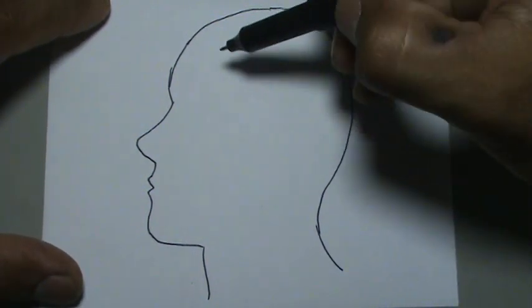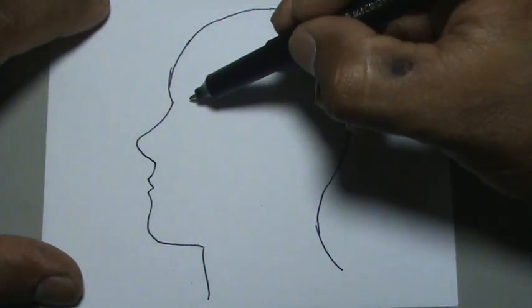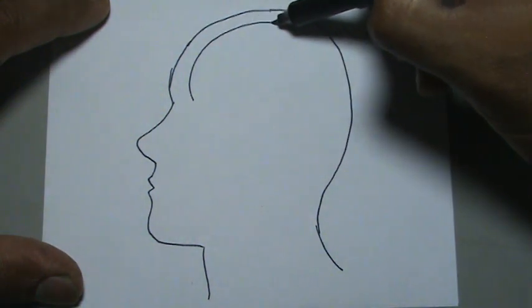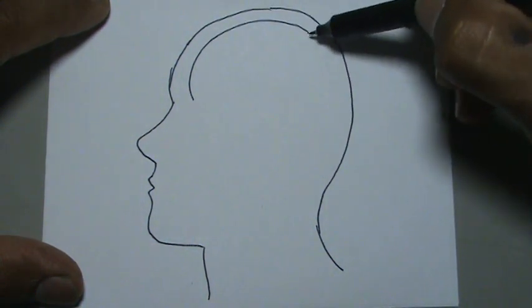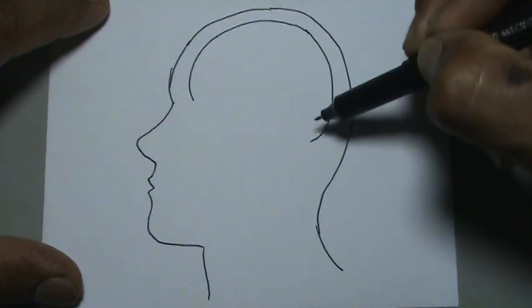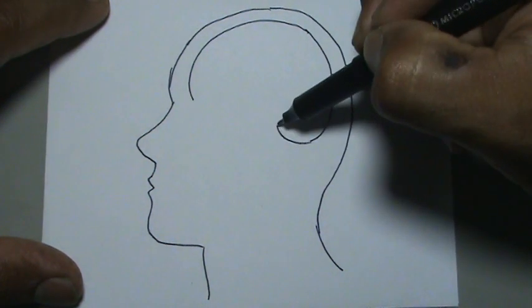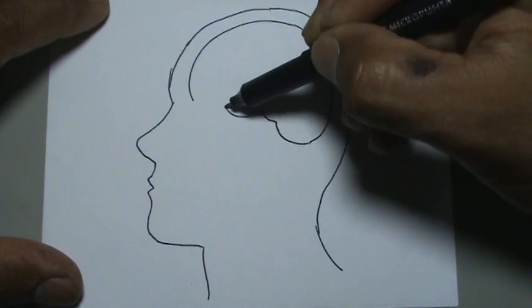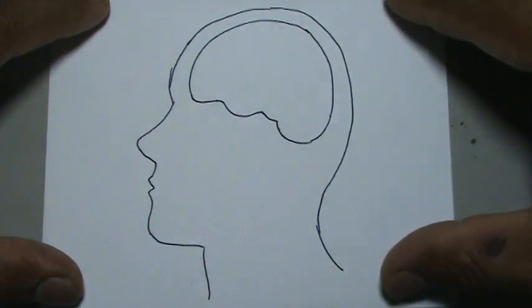Vamos a dibujar entonces el cerebro, arrancamos por aquí, hacemos esta curva siguiendo la misma línea del croquis de la cabeza, por aquí terminamos, cerramos como si estuviéramos dibujando un casquito.